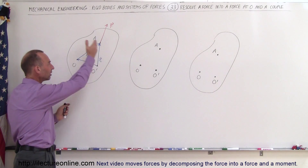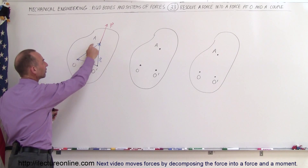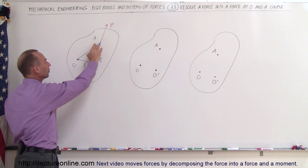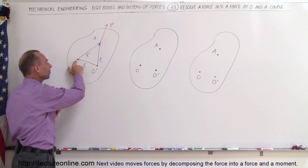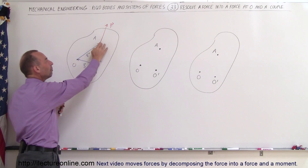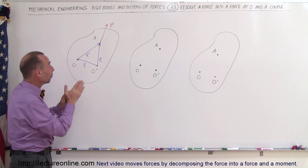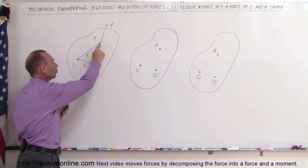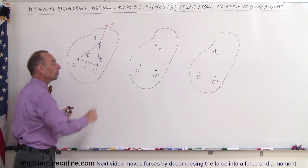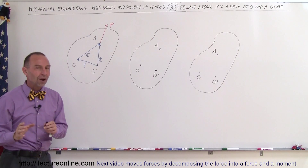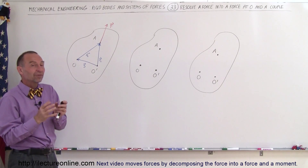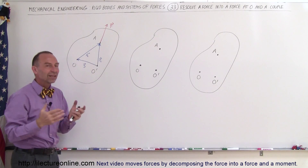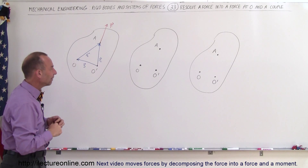Here we have an object with three points identified: point O which represents the origin, point A which represents the point at which the force acts, and R is the position vector from the origin to where the force acts. We also have another point O prime, and later on we want to represent the equivalent system by moving the force to O prime and see what that looks like.